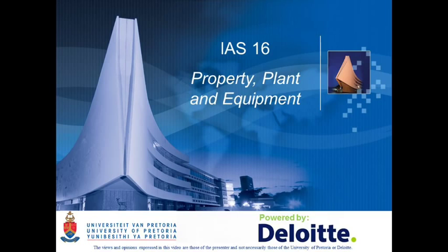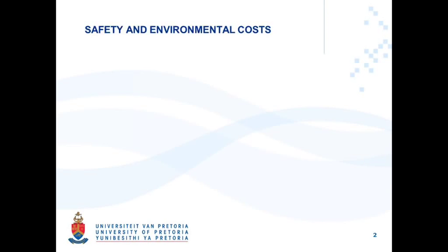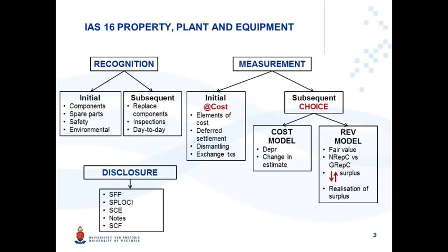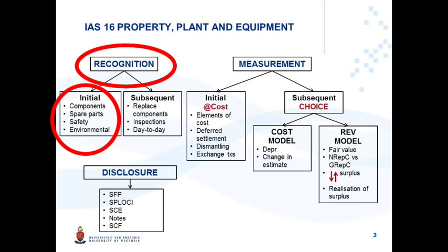IAS 16 Property, Plant and Equipment — Safety and Environmental Costs. This serves as a summary of the total content of IAS 16. Accounting treatment consists of recognition, measurement and disclosure. Currently we are focusing on recognition, and specifically initial recognition. Aspects surrounding components and spare parts and the influence thereof on initial recognition has already been discussed. The focus of this presentation is the effect of costs incurred for safety and environmental reasons.